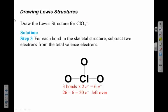Step three: take your electrons and place them in the molecule in the most reasonable way. I already have a skeletal structure and 26 total electrons. I've already used 6 to make the skeletal bonds, so I subtract those and know I still have 20 more to put in. If your Lewis structure does not contain the correct number of electrons, it cannot be correct — you have to show all of them.